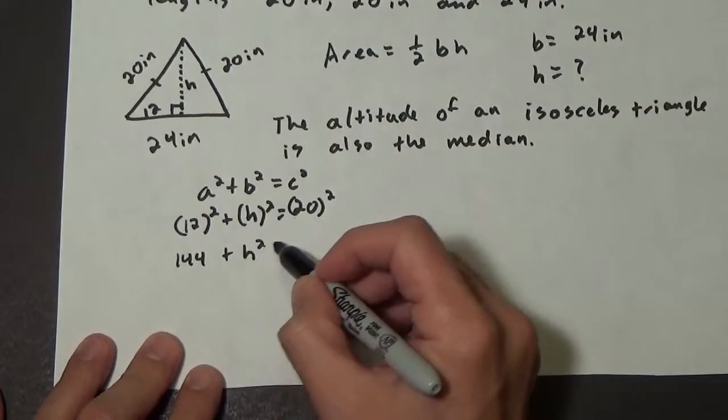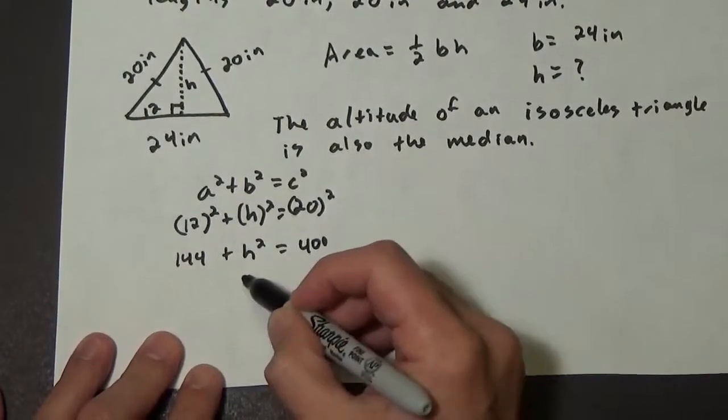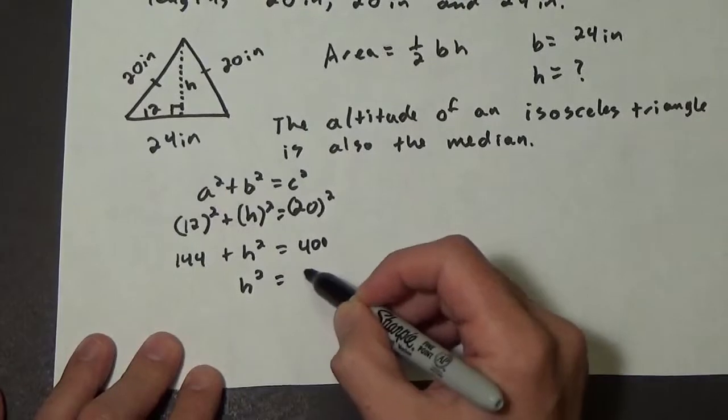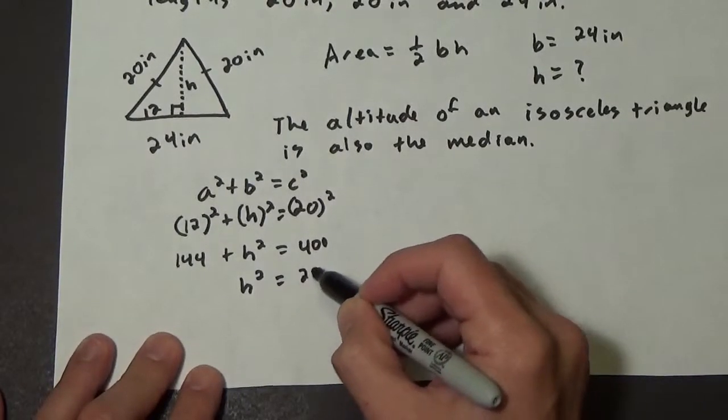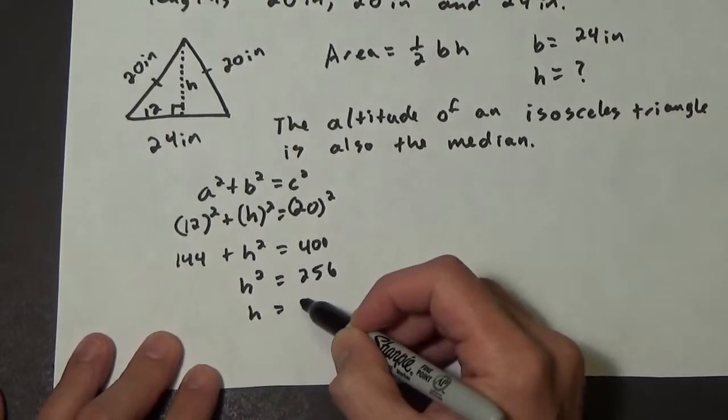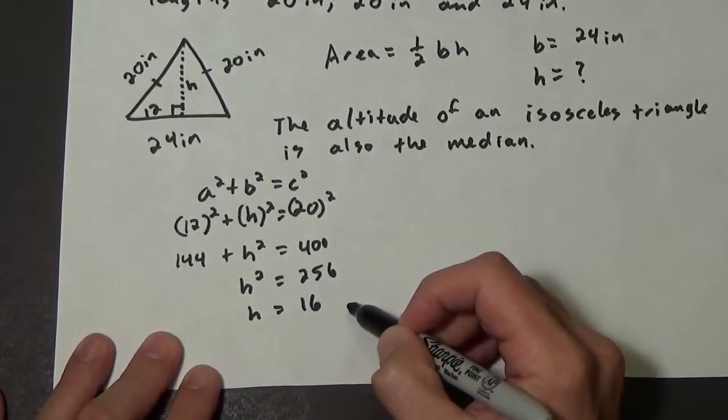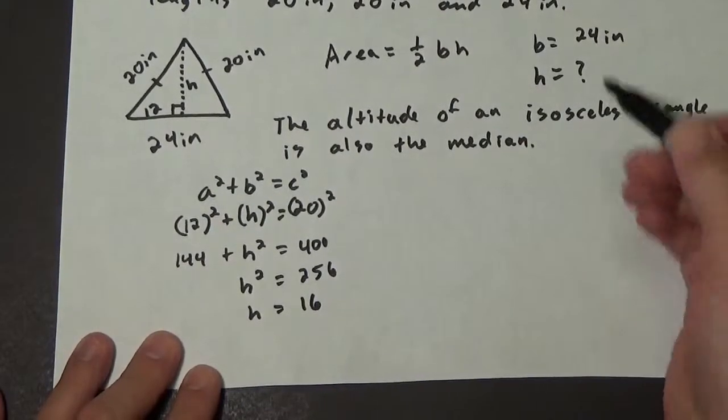+ h² = 400. So h² is 256, and h is 16. Now we can